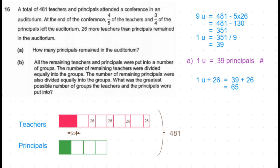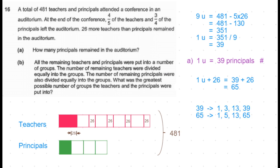To find the largest possible number of groups in which teachers and principals can be accommodated with equal numbers of each per group, we need to find the highest common factor of 39 and 65. The factors of 39 are 1, 3, 13, and 39. The factors of 65 are 1, 5, 13, and 65.